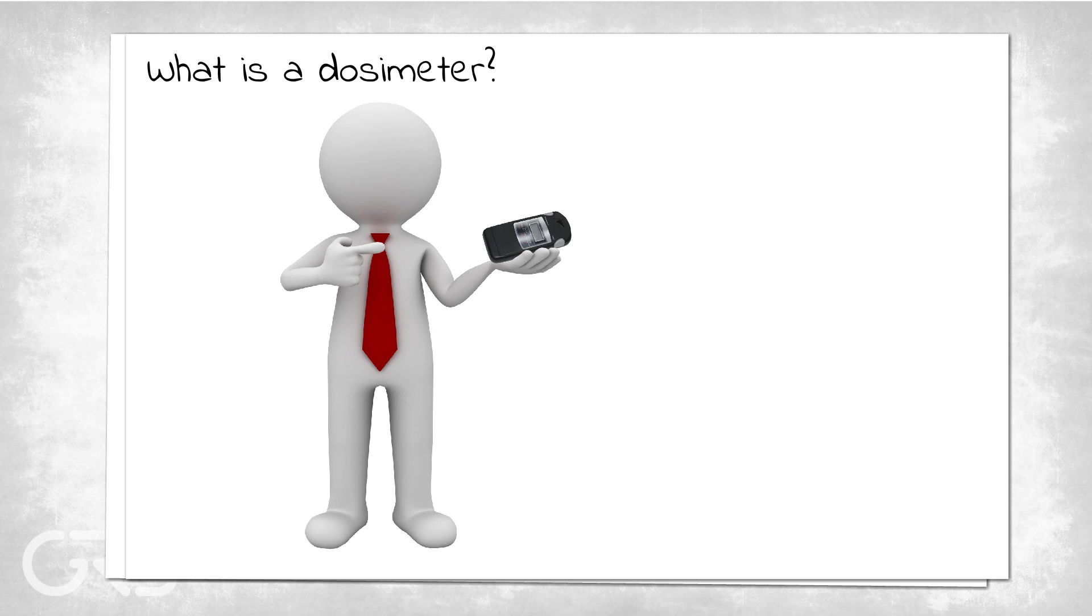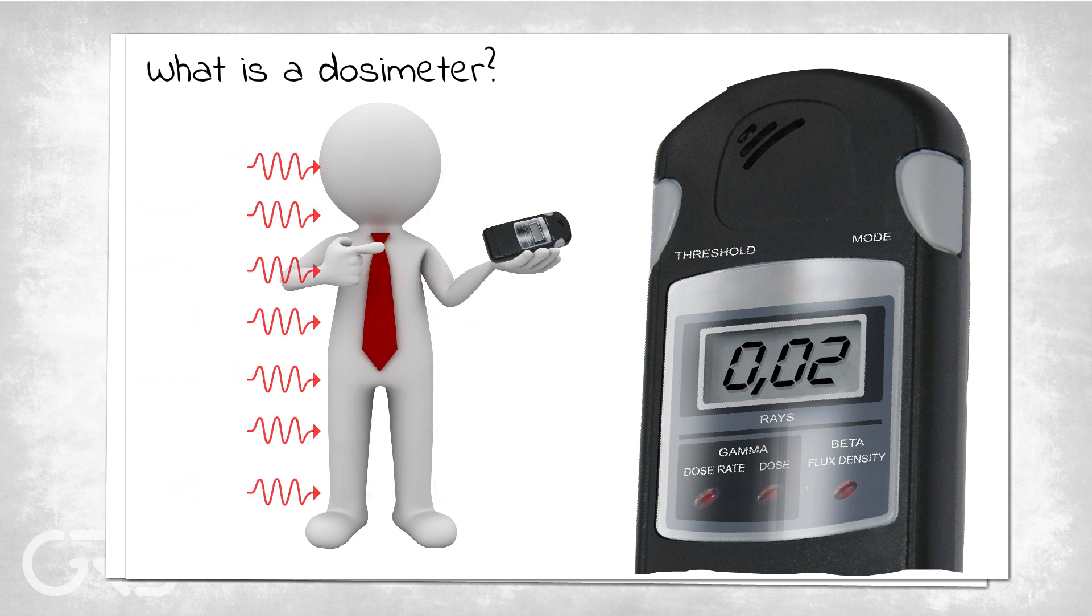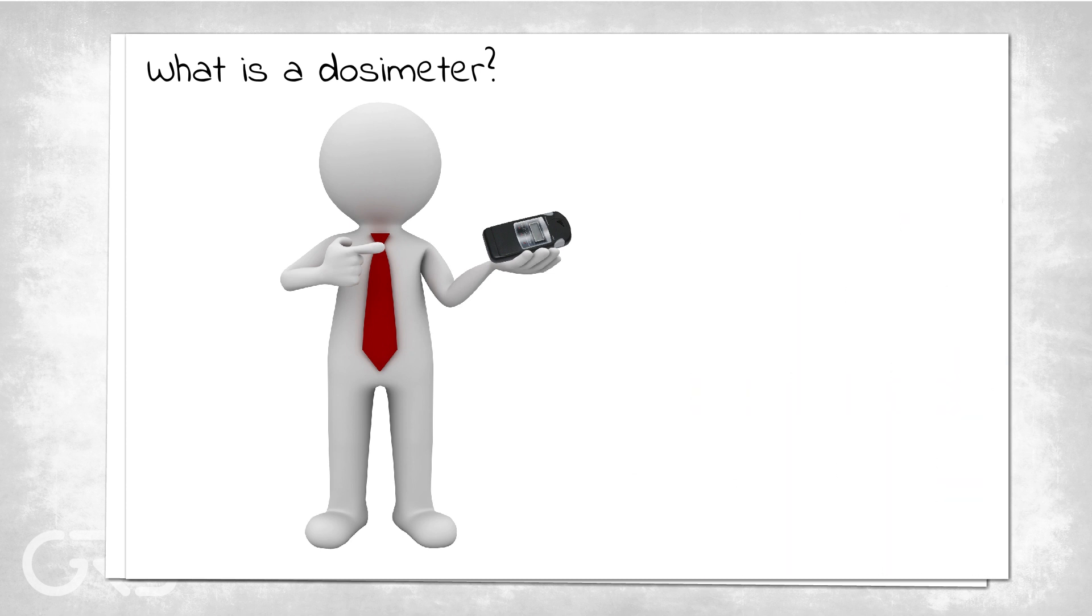The central task of a dosimeter is to measure the energy of the radiation that the human body has received over a certain period. This ensures that the statutory limits are not exceeded and that the person is not exposed to high radiation.